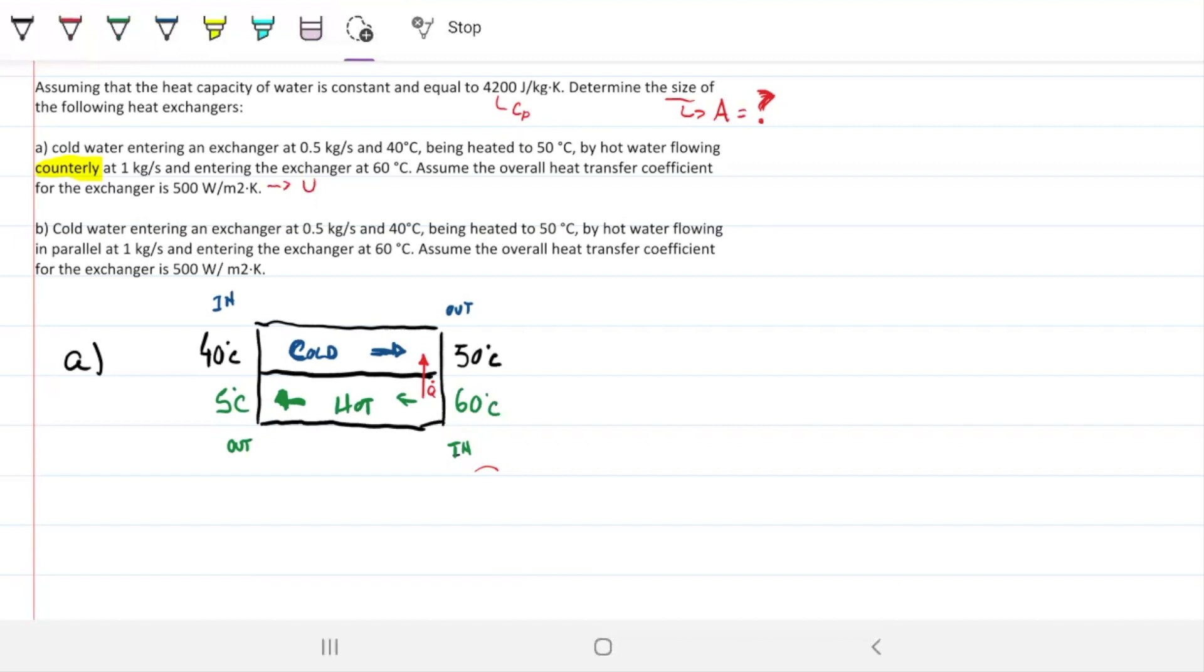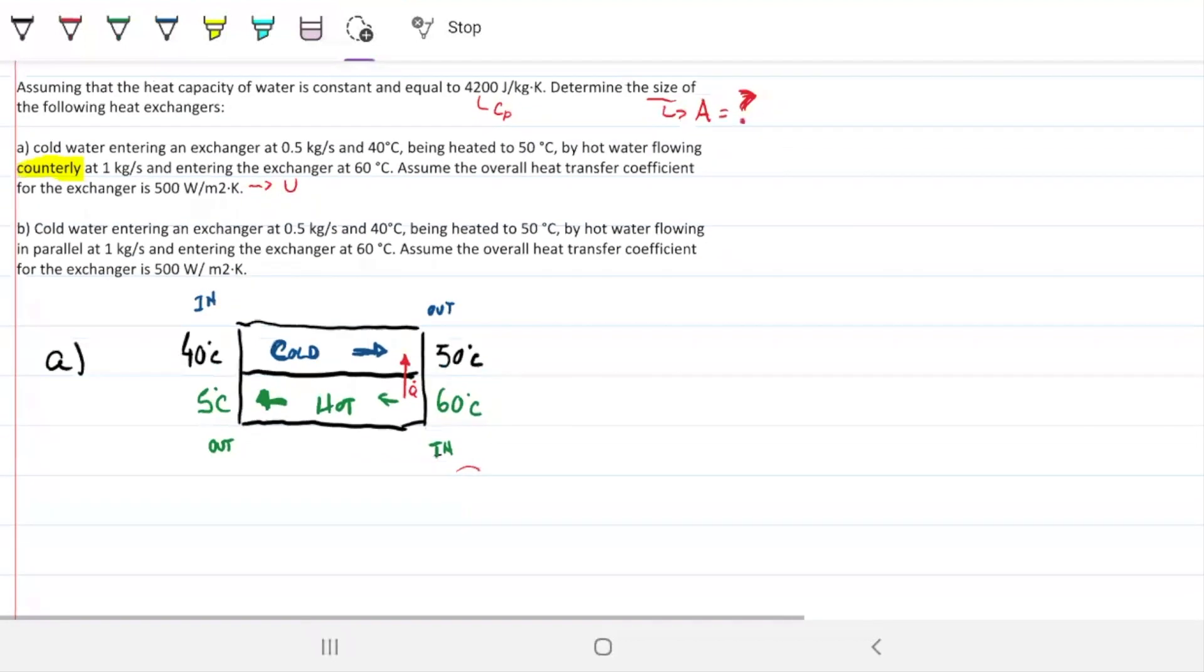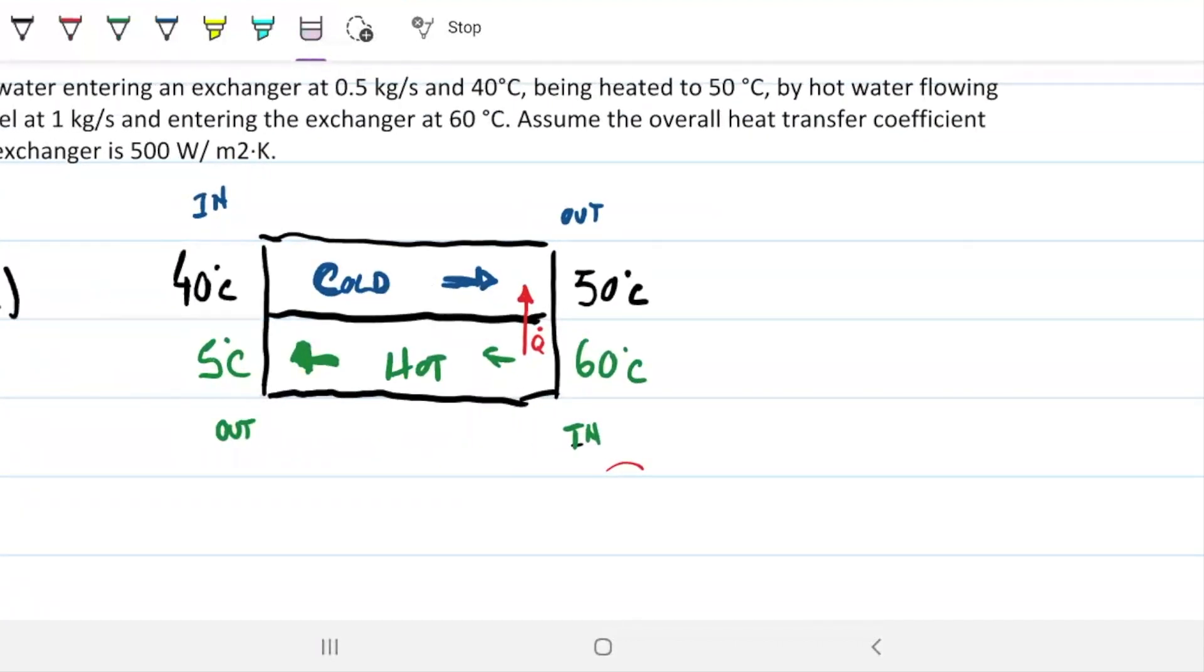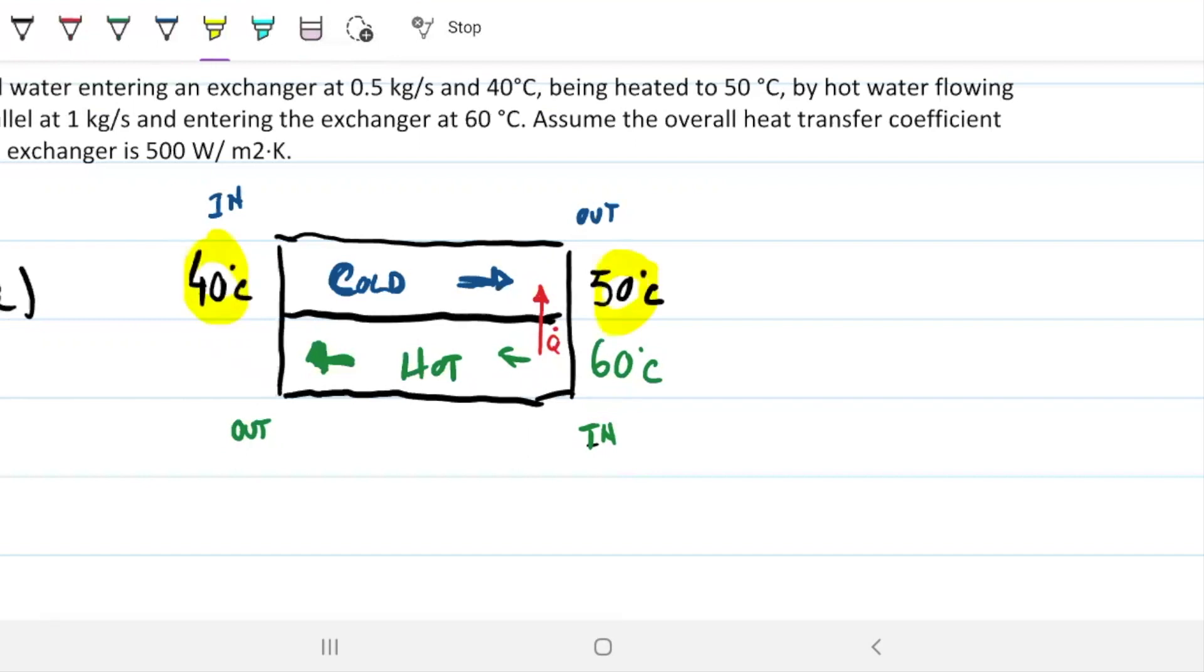Whenever we get these heat exchanger problems, all of them, I would like you to draw this little drawing. Draw a little square or rectangle, and you're going to put cold and hot, and the arrows whether they are counter or parallel. In this case, they are counter, so the arrows go opposite directions. Doing this, I can assure you your error rate is going to drop by more than 60%. Our cold water is entering at 40 and leaving at 50. Our hot water is entering at 60 and leaving at something we don't know.